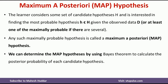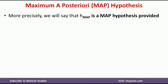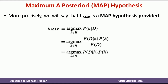We can determine the MAP hypothesis by using Bayes Theorem to calculate the posterior probability of each candidate hypothesis. More precisely, HMAP is the Maximum A Posteriori Hypothesis provided HMAP equals argmax over H in H of P(H|D). That is, we need to find the posterior probability of all hypotheses and select the one with the maximum value.